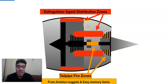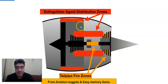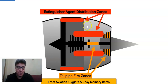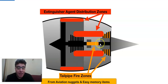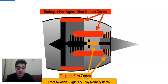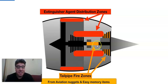This is the extinction agent distribution zone. When you release the fire bottle, it will extinguish the fire in the sensitive area — the external part of the engine or the nacelle. On the other side, the tailpipe fire develops in the combustion chamber or the aft turbine race. This is the tailpipe fire zone — it is an internal fire. If you release the fire bottle, it will do nothing for the internal tailpipe fire.